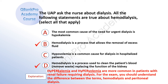The correct answer is B: hemodialysis is a process that allows the removal of excess fluid. And D: hemodialysis is a process used to clean the patient's blood, remove waste, replacing the function of the kidney. Explanation: Hyperkalemia and hypervolemia are more common in patients with renal failure requiring dialysis. For the exam, you should understand the difference between the terms hemodialysis and peritoneal dialysis.